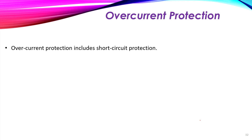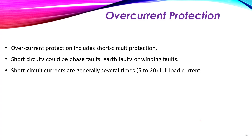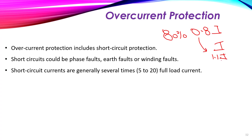Another portion of the over-current family is short-circuit protection. Over-current protection has two children: overloading and short circuit. Short circuits can be phase faults, earth faults, winding faults, and so on. Short-circuit currents are generally five to twenty times the full-load current, whereas overloading involves only a small increase — from 0.8 to 1.0 or 1.1 of full-load current.